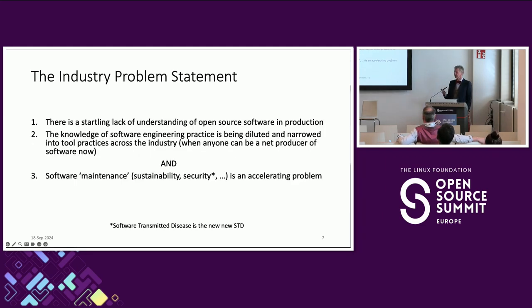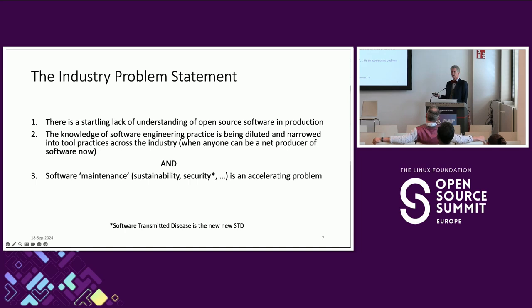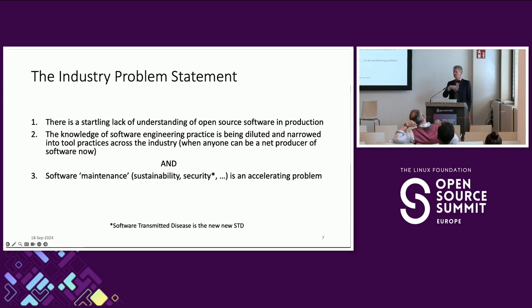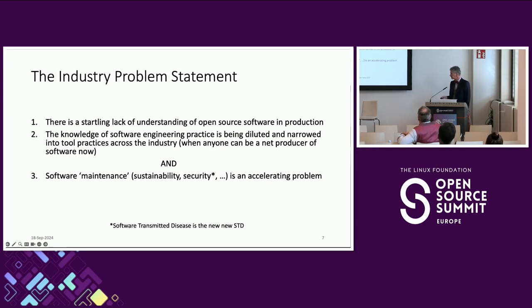Stepping back into a real problem statement: there is a startling lack of understanding of what open source means in a production environment. The knowledge of software engineering practice is being diluted in a world where anybody can be a net producer of software in a published format. The idea that anybody with a book, a three-week course, a boot camp can be a net producer of software means the software systems engineering space — where it's about deploying and maintaining code at scale over a long period — is under pressure. The software maintenance problem, sustainability problem, or security problem is an accelerating problem. I've been joking that software-transmitted disease is the new STD.